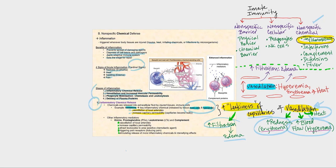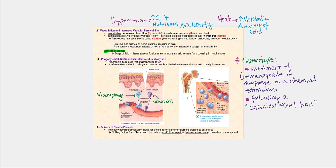Other inflammatory mediators include kinins, prostaglandins, leukotrienes, and complement. The key effects to know are: vasodilation of local arterioles, increased capillary permeability, attraction of leukocytes to the area as positive chemotactic agents, triggering of pain receptors, and stimulation of more inflammatory chemicals. The primary chemical to know is histamine.